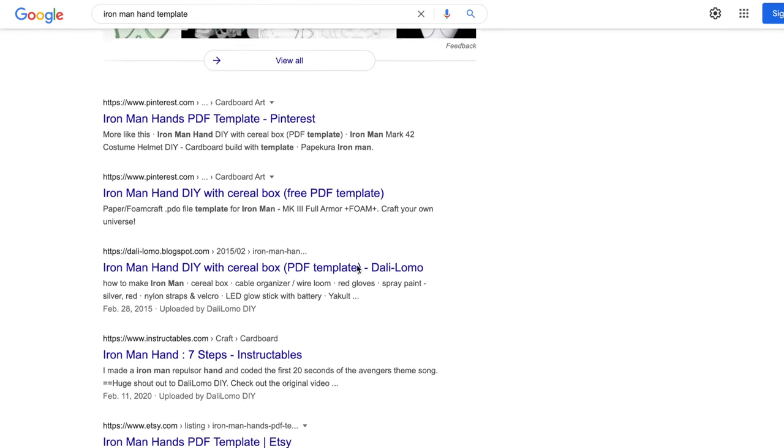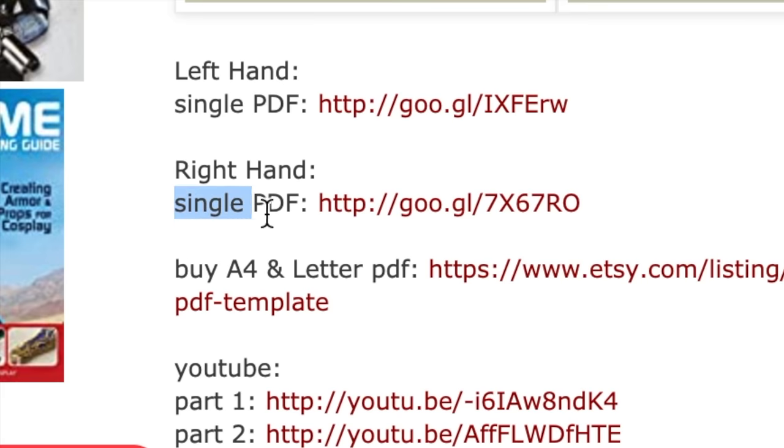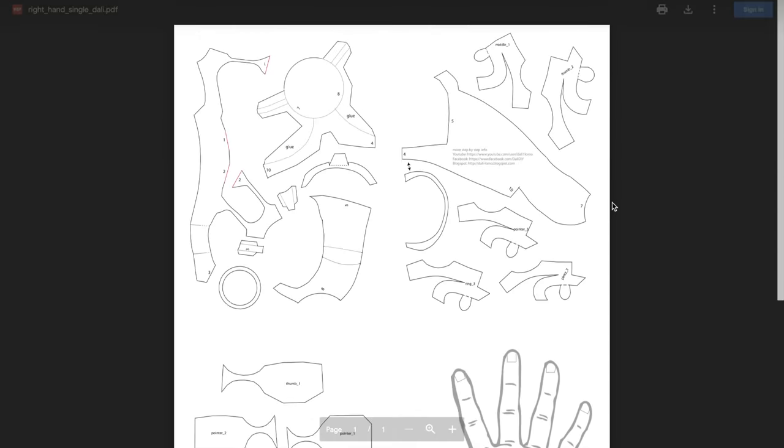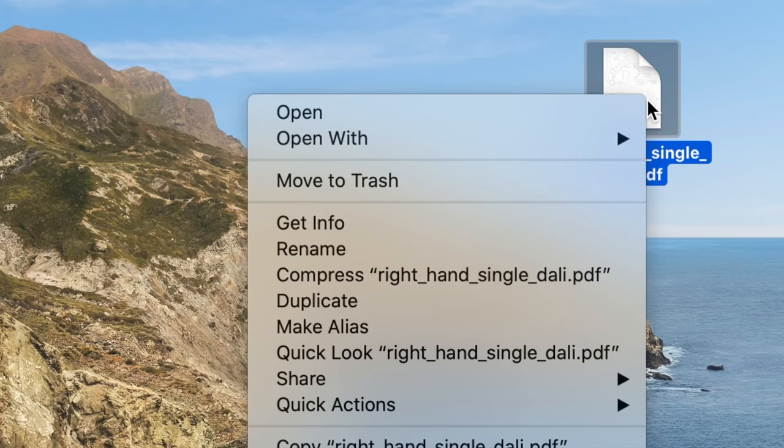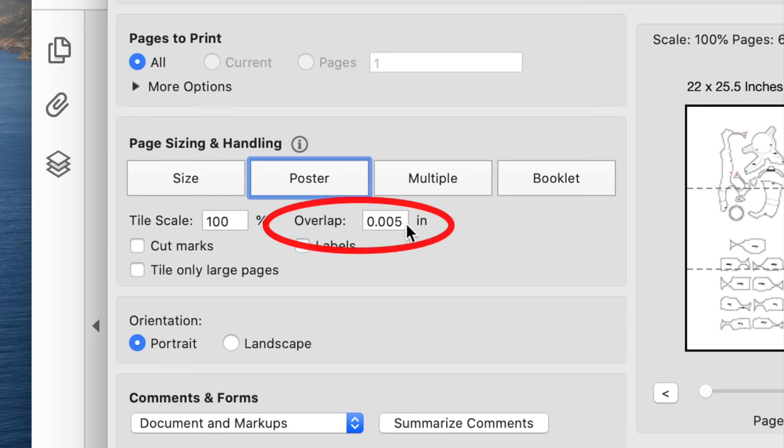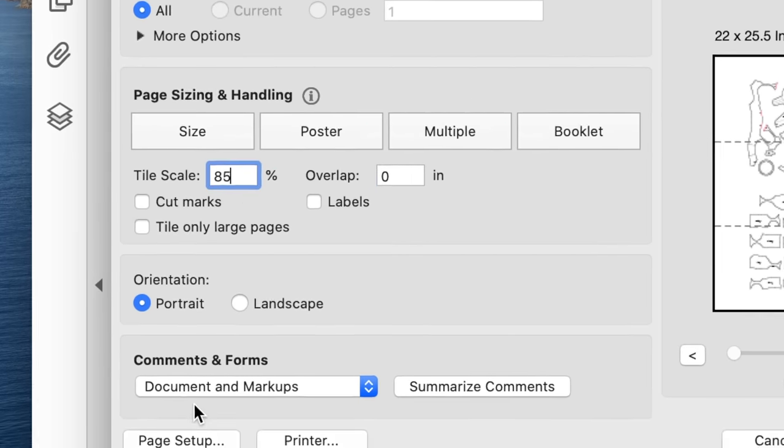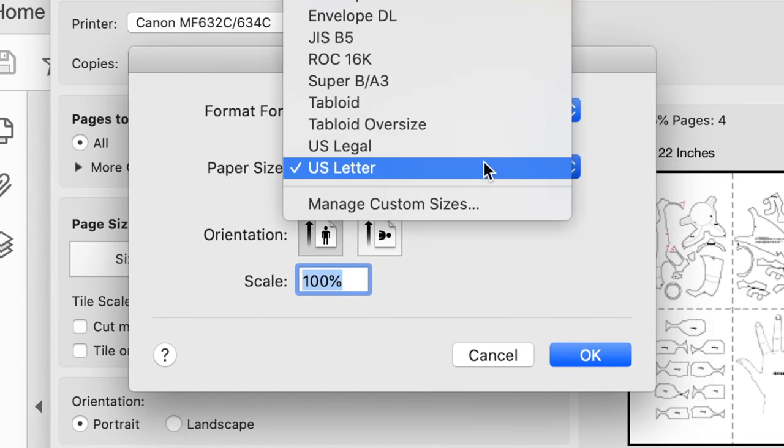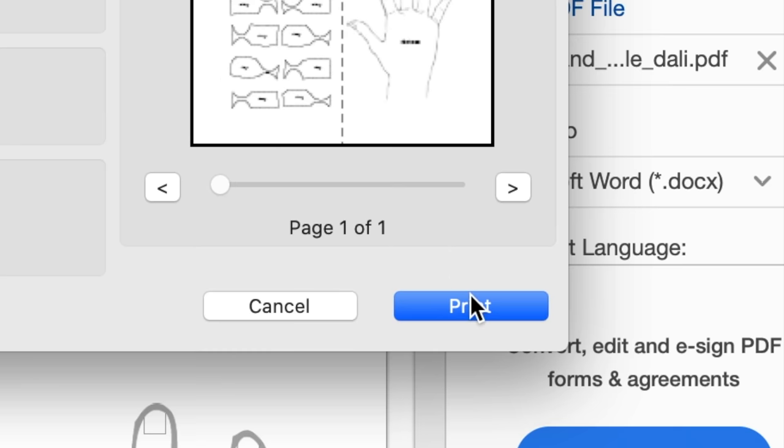To get started, I found a free Iron Man hand template online, which I'll leave a link to down below. You'll need to open this template with Adobe Reader so it prints in the correct scale. Select the poster format, then set the overlap to zero. For my personal hand size, I set the tile scale to 85%, specify what type of paper you're using, and then it's ready to print.